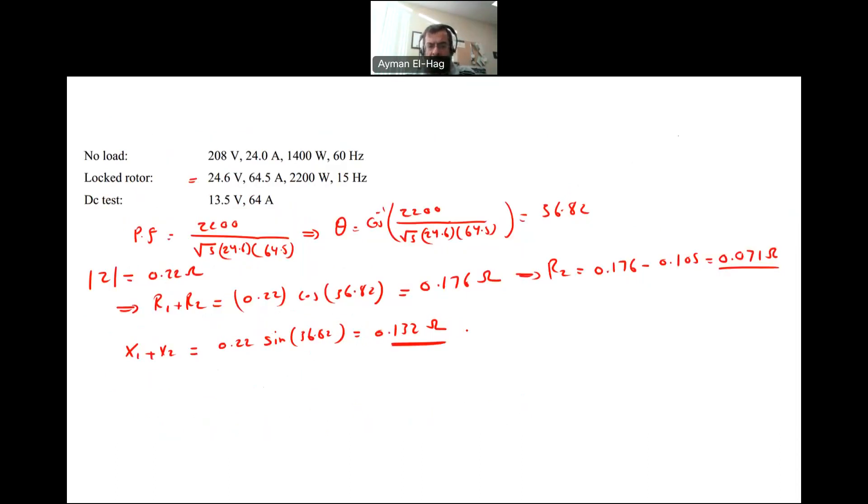I want to find X1, X2 corrected to 60 hertz. We multiply this by a factor of 60 hertz divided by the test frequency 15 hertz, times 0.132. This gives me a total value equal to 0.528 ohms. This is X1 plus X2.